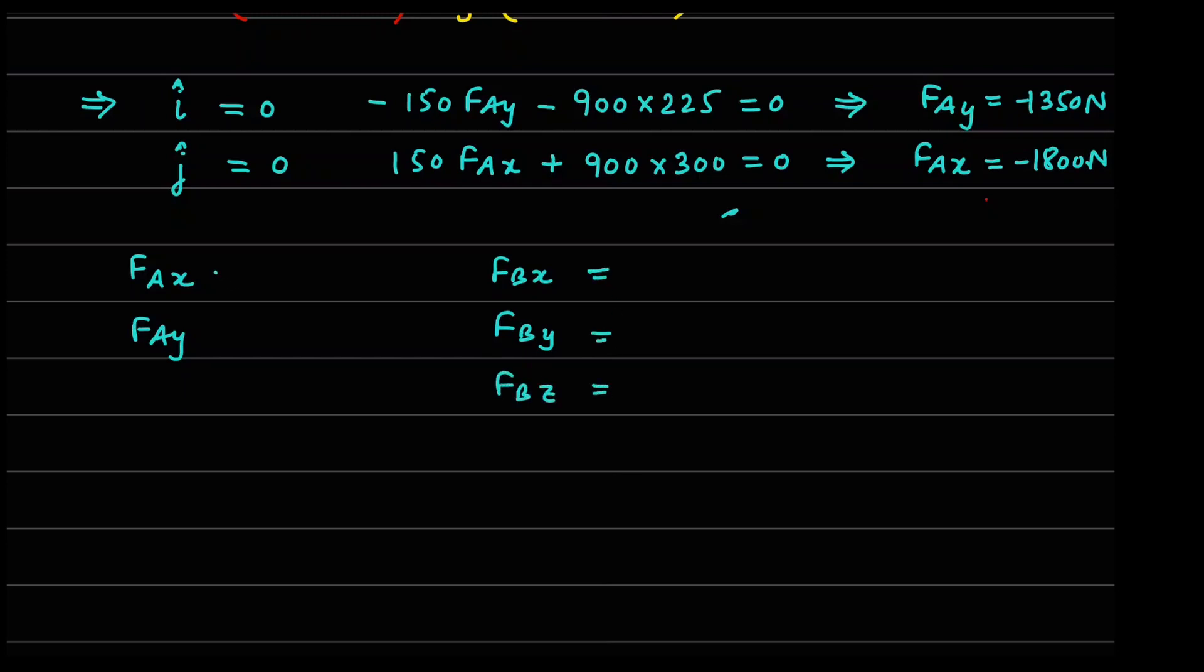But FAX is minus 1800, FAY is minus 1350, FBX is negative of FAX, so it becomes 1800 newtons. And FBY again negative, so 1350 newtons and FBZ that we have seen 900 newtons. So, this is the final answer to this problem.